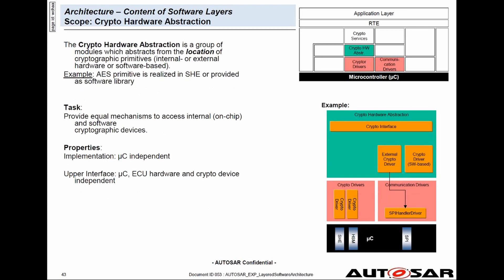Next is the crypto hardware abstraction. This provides abstraction to the crypto drivers. The crypto interface will abstract from either the internal crypto hardware, the external crypto hardware, or it could also be that we don't have crypto hardware — instead we have crypto software. Irrespective of what kind of cryptographic implementation we use, this interface provides a layer of abstraction to the above layers.